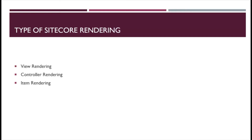There are three types of rendering that Sitecore currently supports: view rendering, controller rendering, and item rendering. In view rendering, we provide the view name. In controller rendering, we provide the controller name and action name. Item rendering uses the same item — most likely no one will be using item rendering.